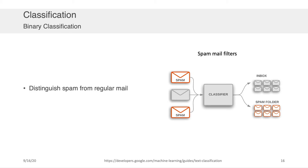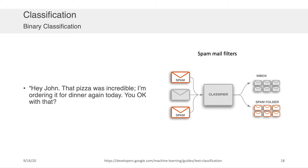One example of a binary classification problem that's phenomenally common is distinguishing spam from regular mail. Spam filtering has a lot of impact on our lives, and importantly, spam classification is a natural language processing problem. If you and I read the sentence 'Hey friend, click this link to win a million dollars,' we probably know that's spam, compared to a message saying 'Hey John, that pizza was incredible, I'm ordering again for dinner tonight.' The fact that we can intuitively detect evidence from the language construction bodes well for building an NLP-based classification model.